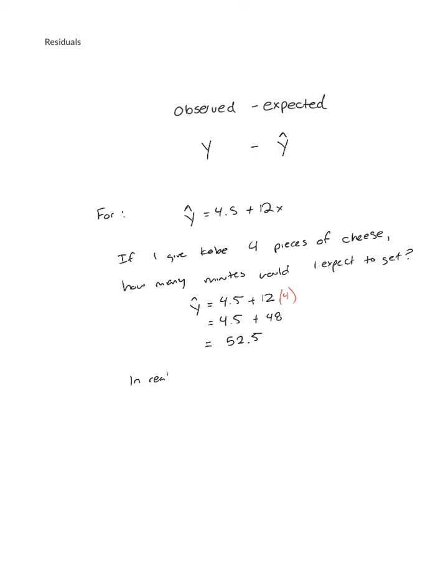Now, in reality, let's say Kobe leaves after 30 minutes. Was my prediction accurate? Well, I thought he'd stay for 52.5. He only stayed for 30, so not particularly. I can measure exactly how accurate it is by calculating the residual.